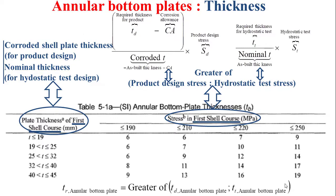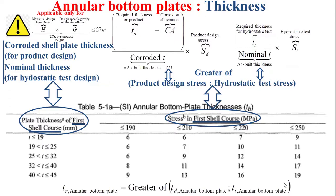Finally, the required thickness for the annular bottom plates should be the greater of the required thickness for product, denoted by TD, and the required thickness for hydrostatic test, denoted by TT, determined using Table 5-1. It is important to note that this table is applicable only for an effective product height lower than 27 meters.